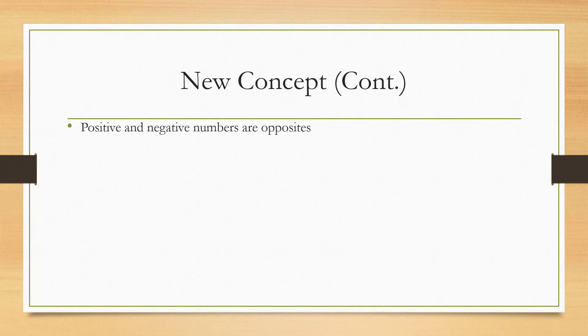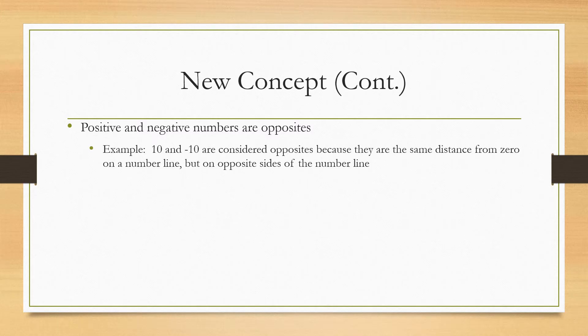You also need to know that positive and negative numbers are opposites. So for example, 10 and negative 10 are opposites of each other because they're the same distance away from zero on the number line, but on opposite ends of the number line.